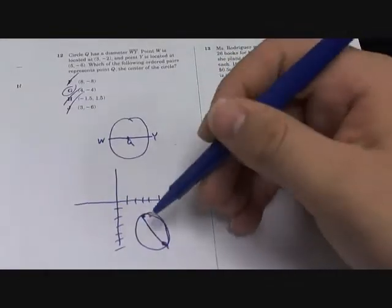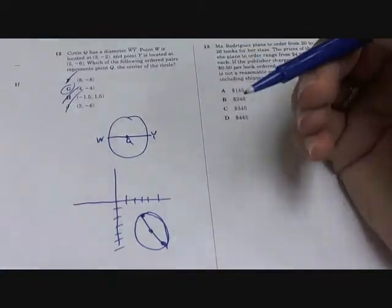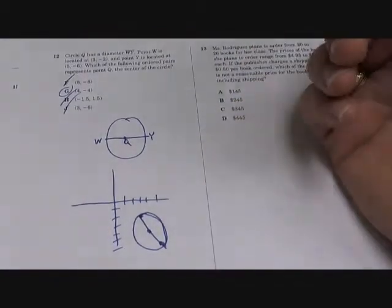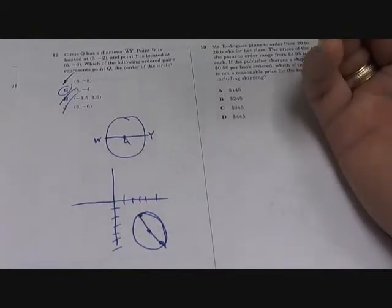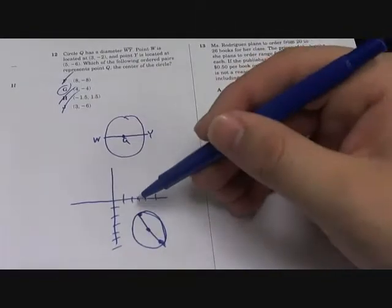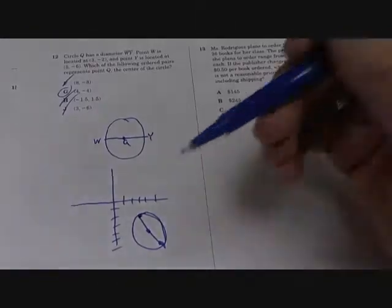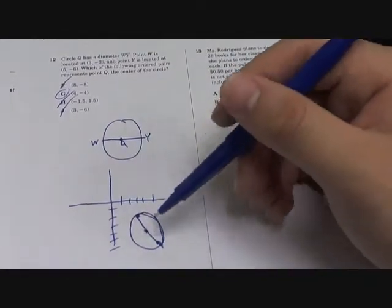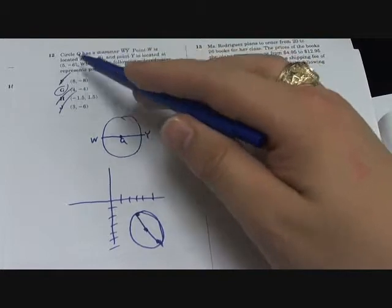G. Remember the center is right in the middle, so you could use the midpoint formula but it's pretty simple. We don't have to use the midpoint formula because it's between 3 and 5, so it has to be in the middle of the x's and the y's. So it's 4, and the middle of negative 2 and negative 6 is negative 4, so the answer is G.